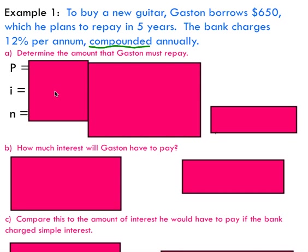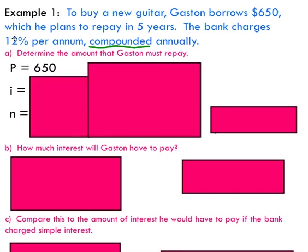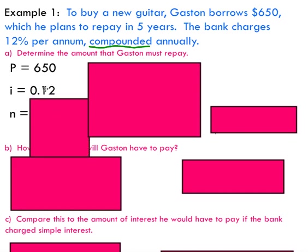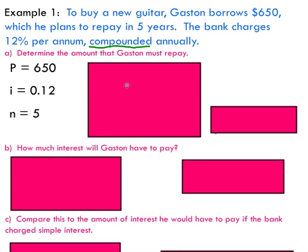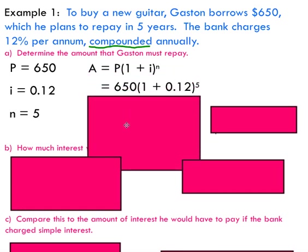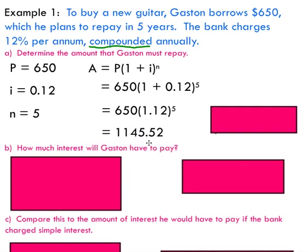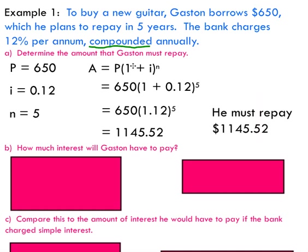Writing out all values before substituting into the formula: P, our principal, is $650 — that's how much we initially borrowed. The interest rate is 12% per year, so 0.12 as a decimal. N, our compounding period, is 5 years. This is a plug-and-play situation — substitute your values, do what's inside the brackets first: 1 plus 0.12, then raise that to the power of 5. We end up with $1,145.52, which is the total amount Gaston must repay after his five-year borrowing period.